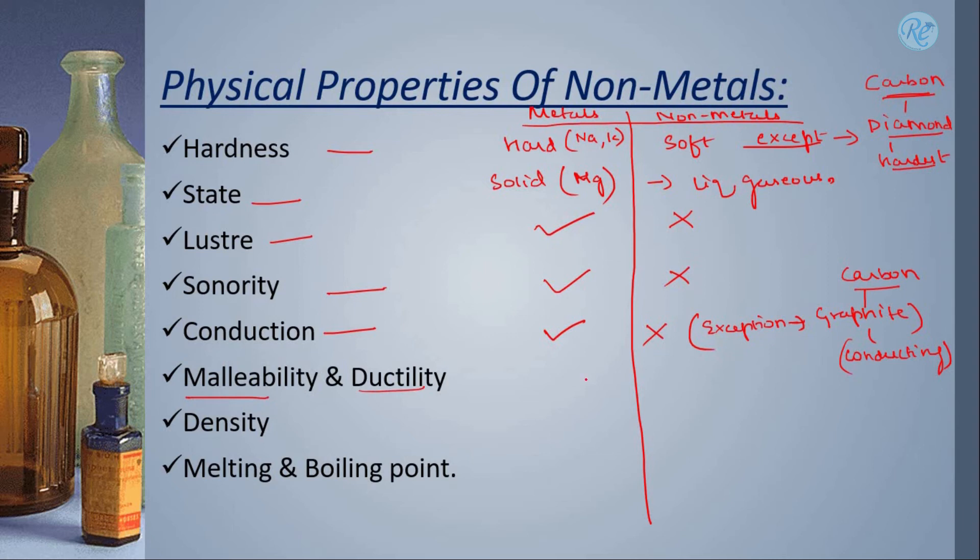Malleability and ductility are the properties which metals have, non-metals do not have.